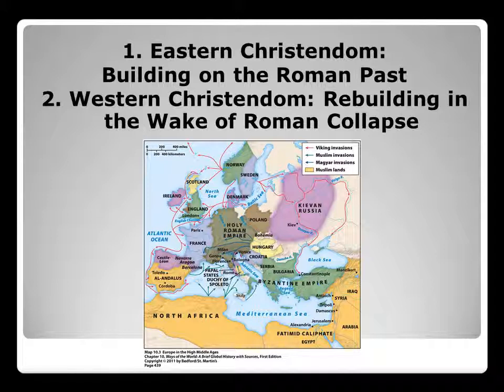These are the two emphases that Strayer will focus on. Eastern Christendom, which is the Eastern Roman Empire — you can see on this map here, it's roughly where the Byzantine Empire is, even though at certain periods it's much larger than that. And then Western Christendom, rebuilding in the wake of Roman collapse. The Roman Empire kind of starts in Italy, in Rome, but then spreads all the way up into England, Scotland, Ireland, through France, and up into some of the Baltic states. You will explore the two different sides of Christendom.